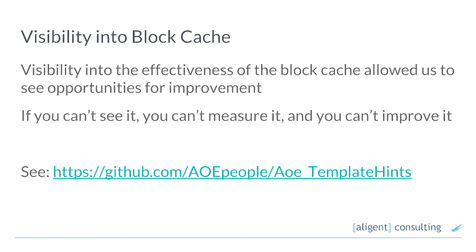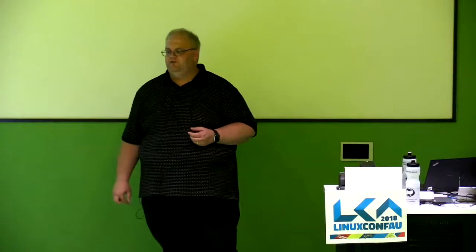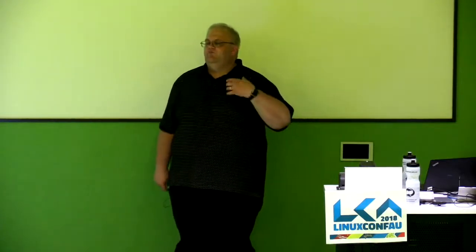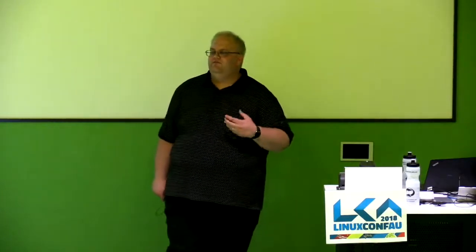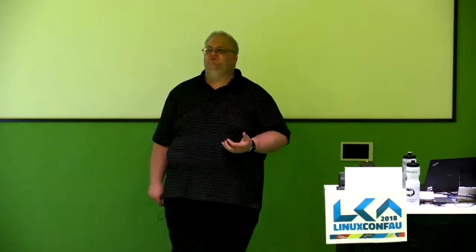We found that the AOE Template Hints module — the advanced template hints module — was really great for getting that visibility. It's great as a front-end developer to say: what template is giving me that content? There are all kinds of mouse-overs as you go around the page. The key takeaway is: if you can't see it, you can't measure it, you can't improve it.